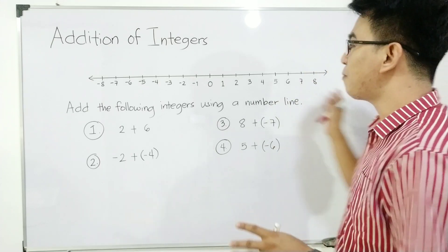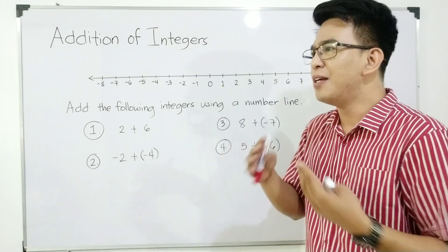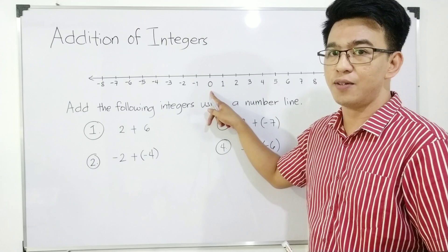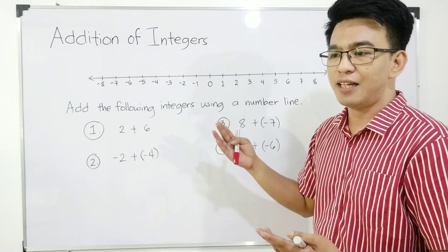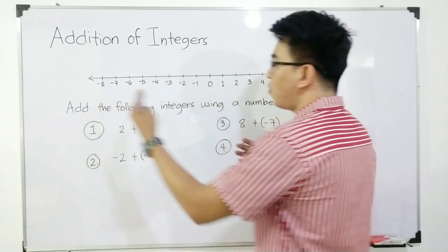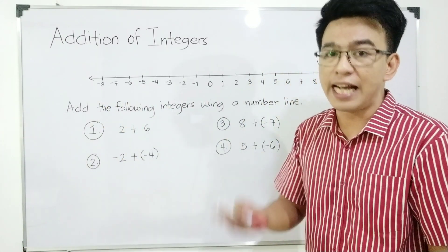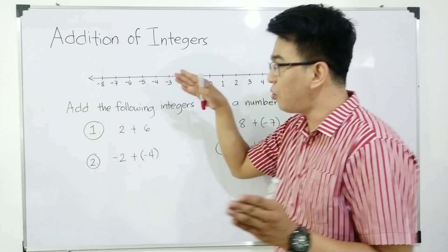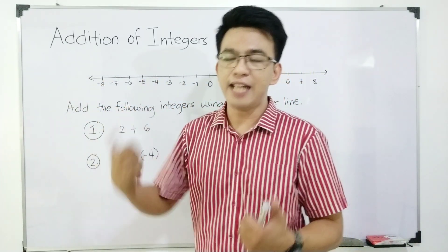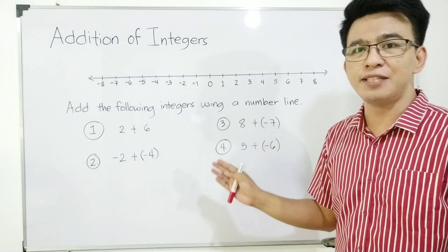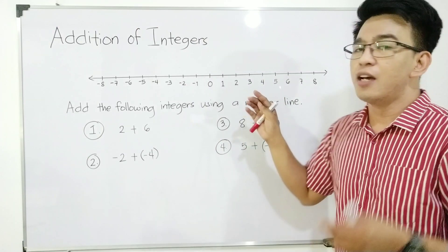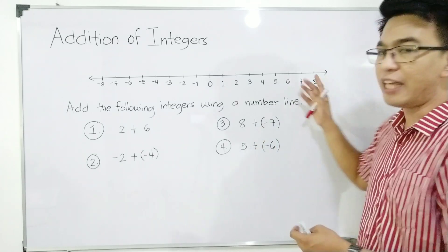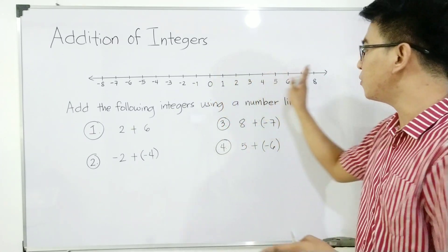Review muna tayo. We have here the number line. We know that meron tayong tatlong parts ng number line. The first is the center of the number line, which is zero. Next are the numbers on the left side of zero, which are classified as the negative numbers. The arrowhead indicates na tuloy-tuloy yung ating number line. Next part ng ating number line ay yung mga numbers na nasa right side ng zero, in which these numbers are classified as positive numbers. Infinite din yung direction ng positive numbers from zero going to the right.